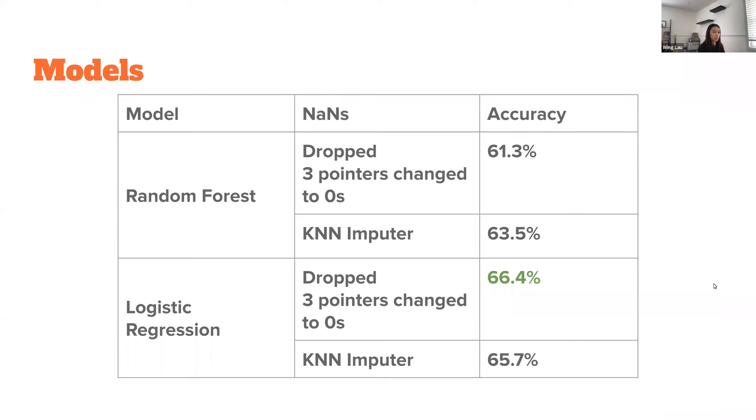I tried a KNN imputer, and the best one was for logistic regression, where it was 65.7% accuracy, which really isn't too far off from our best model, which is great because I was able to use all my data.